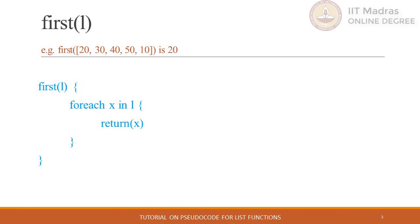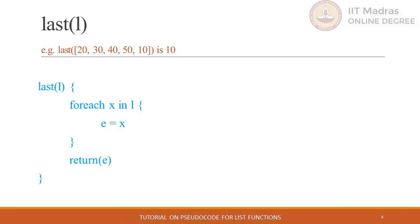The first function accepts a list as a parameter and returns the first element in the provided list. The return statement will terminate the execution of the for-each block while accessing the first element itself. We also have to think about boundary conditions: if we pass an empty list to this function, then the output is undefined, because we cannot compute the first element of an empty list.